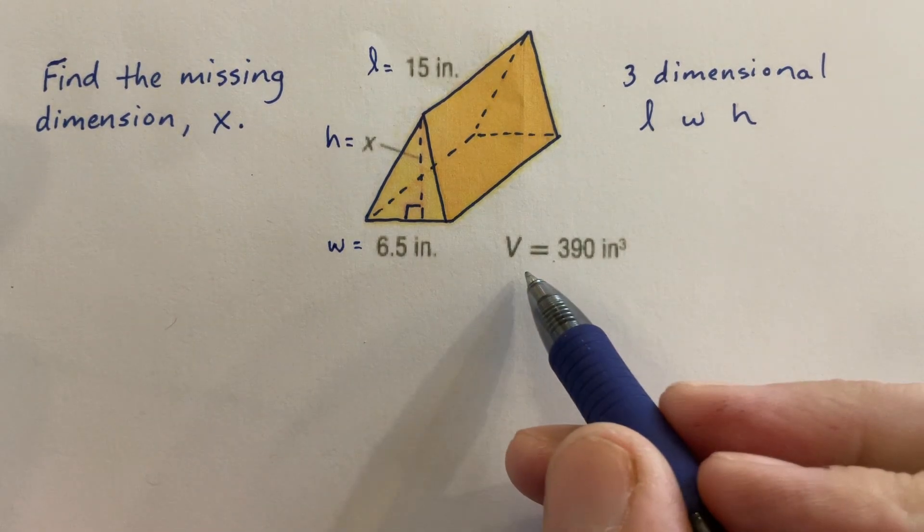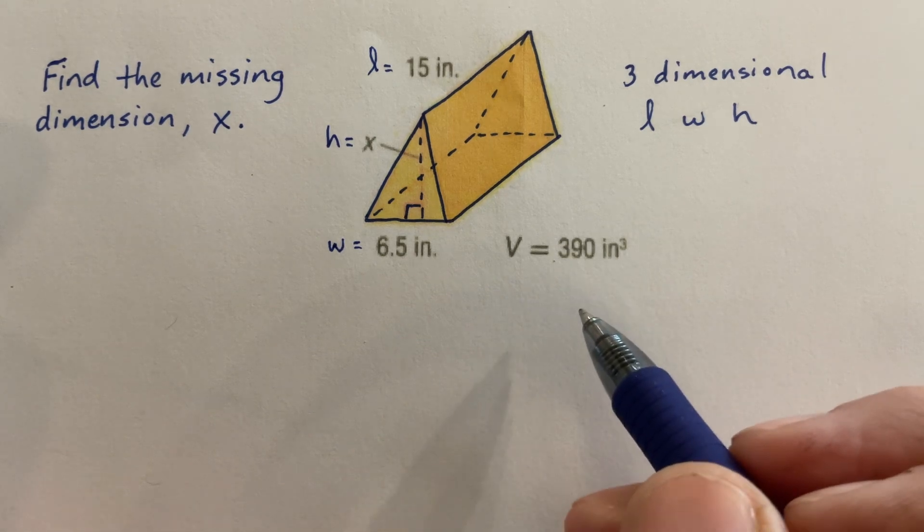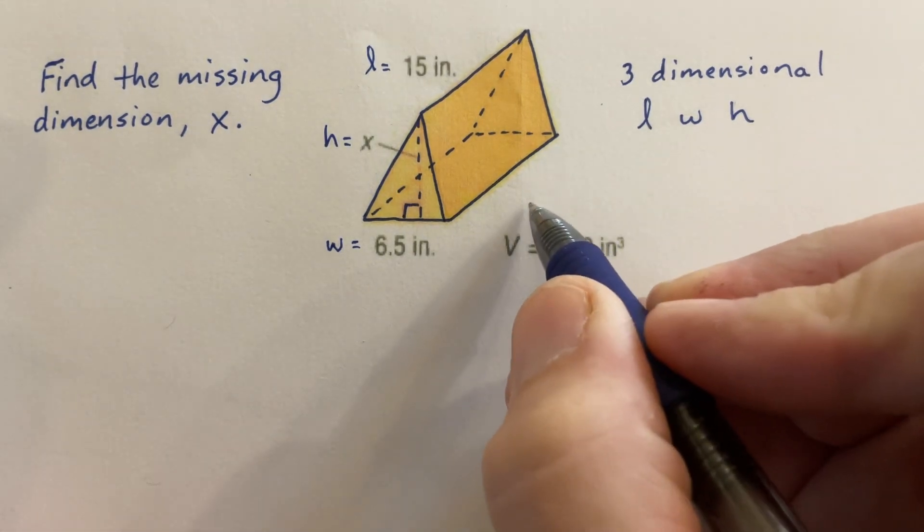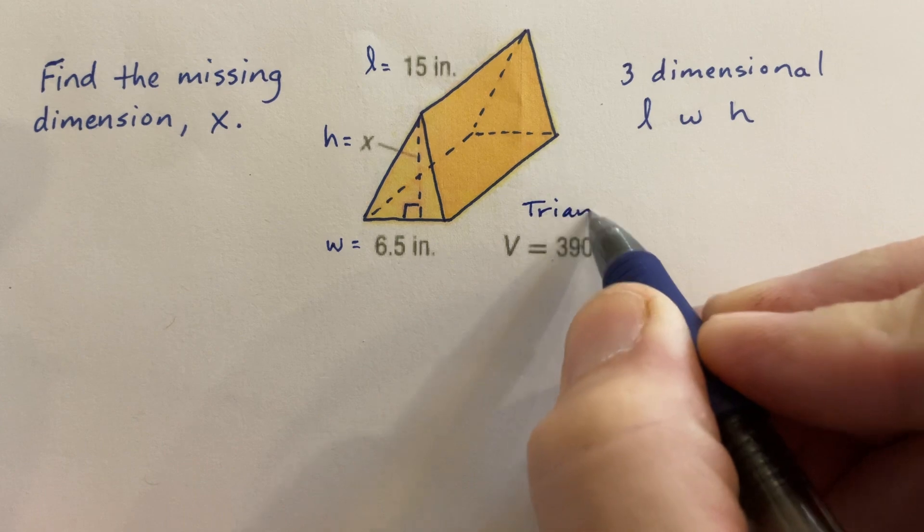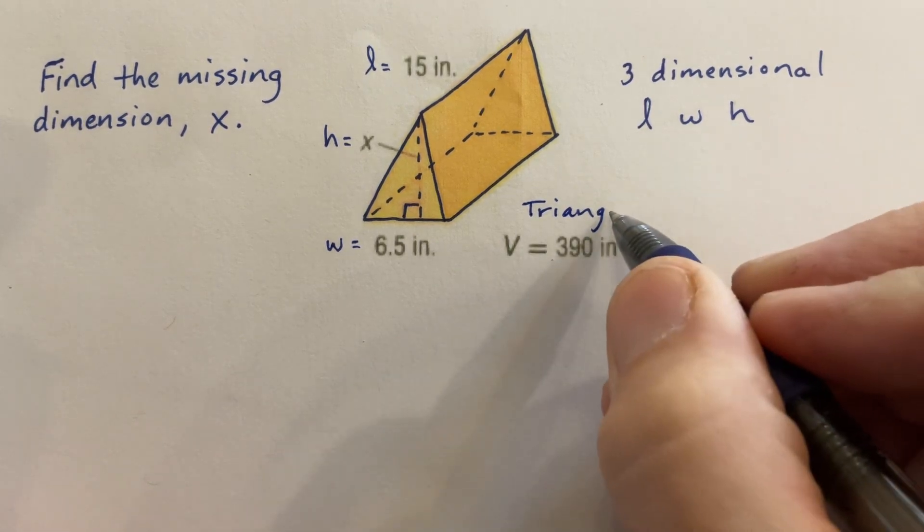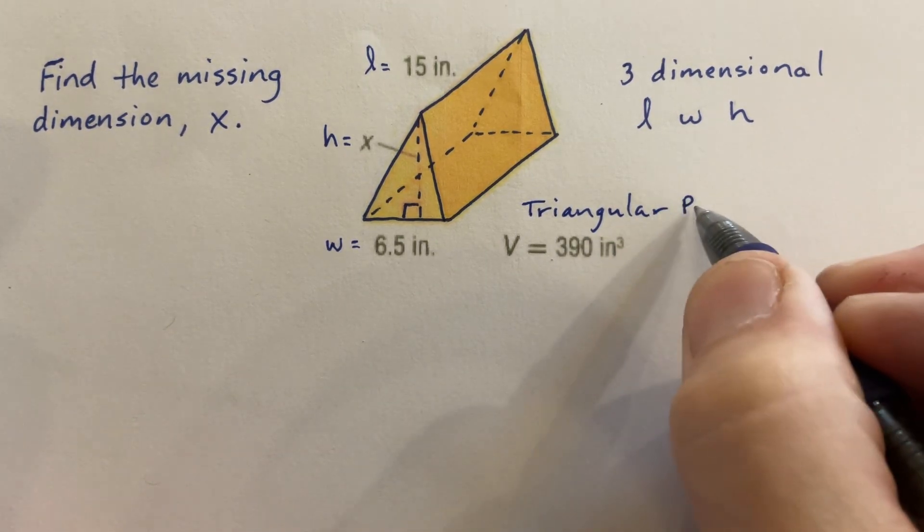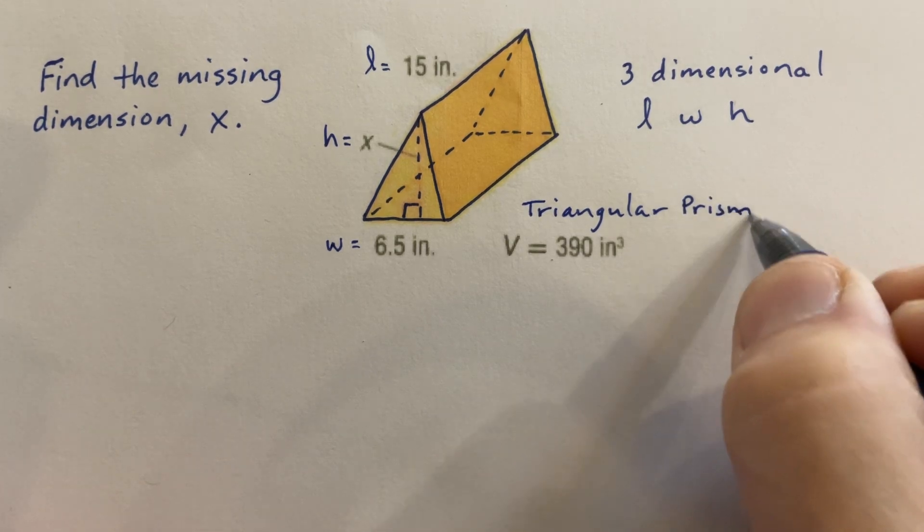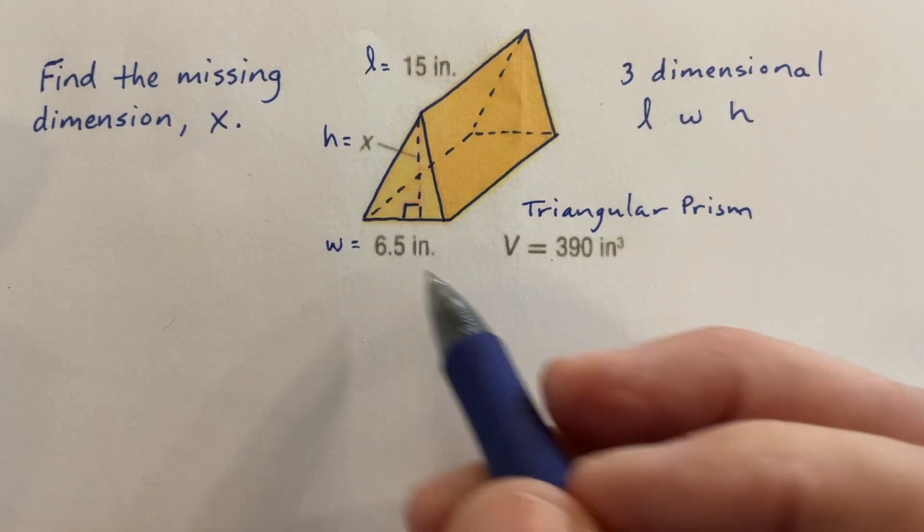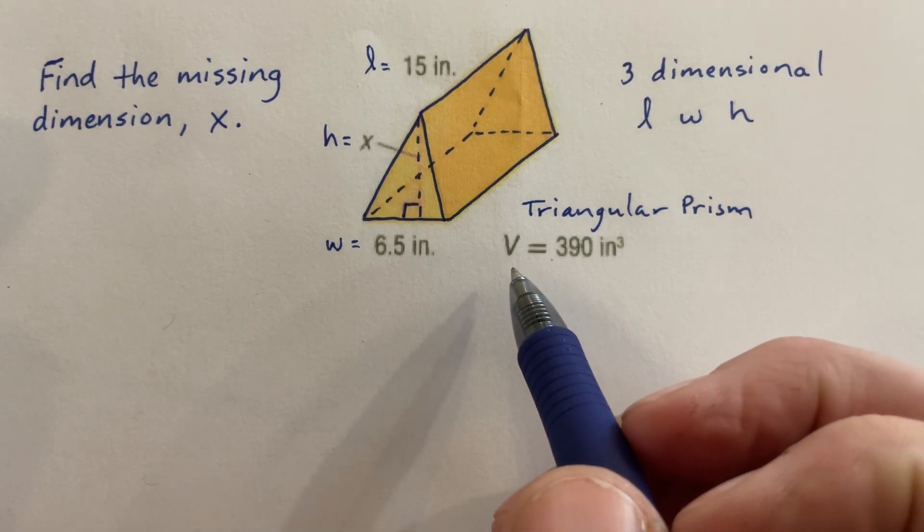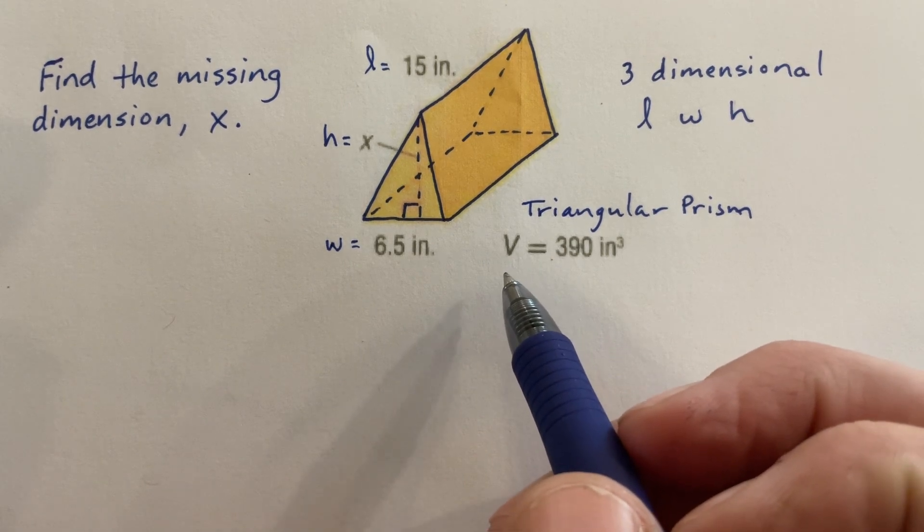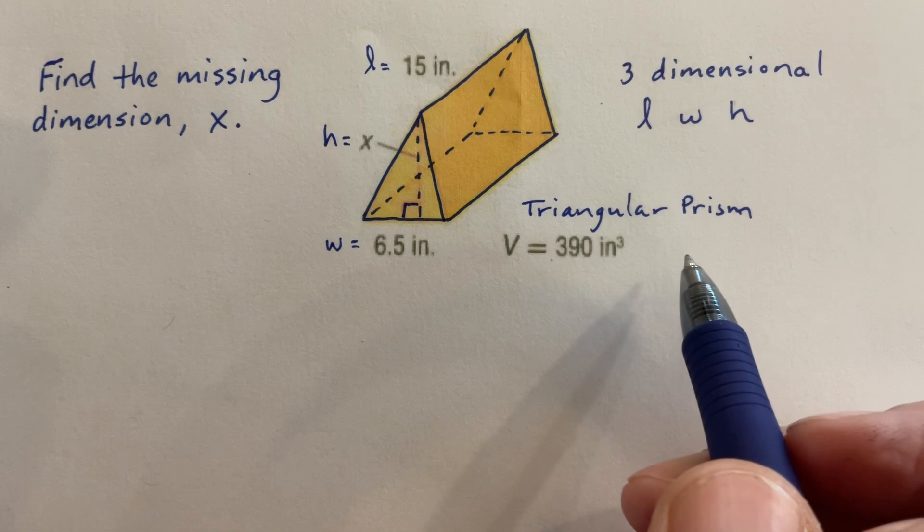They gave us the volume of this three-dimensional shape. This shape is called a triangular prism. To find the missing dimension of a triangular prism, we need to know what is the equation for the volume of a triangular prism.